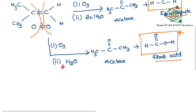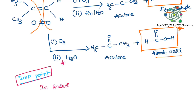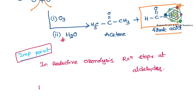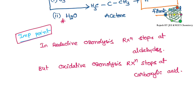We need to remember one important point: in reductive Ozonolysis, the reaction stops at aldehyde — further reaction never takes place. Whereas in oxidative Ozonolysis, the reaction stops at carboxylic acid. That means the aldehyde can be further converted into carboxylic acid in the oxidative process.